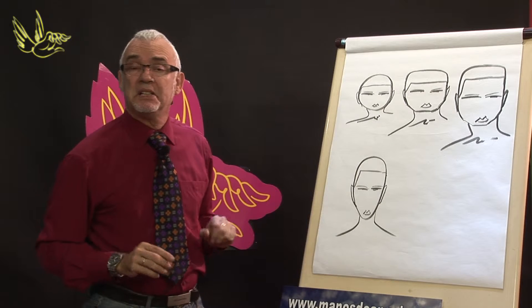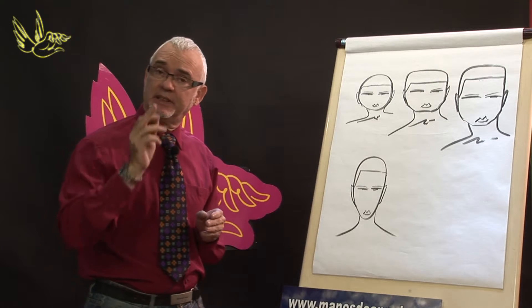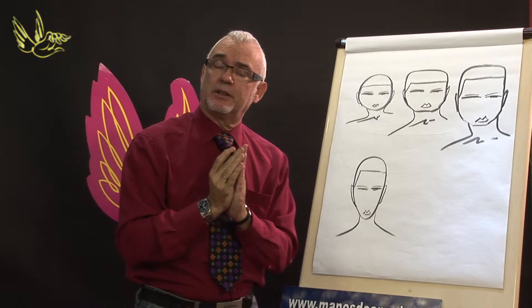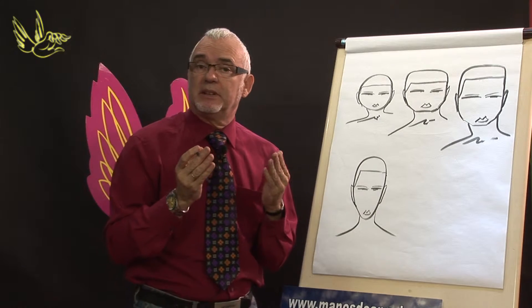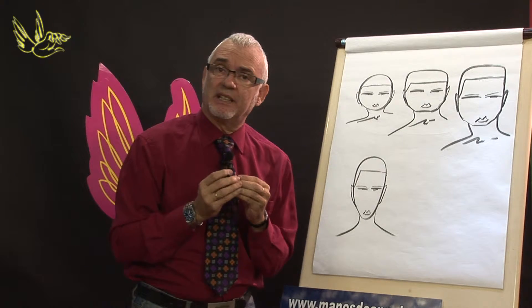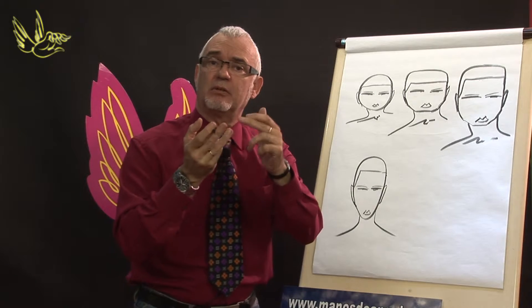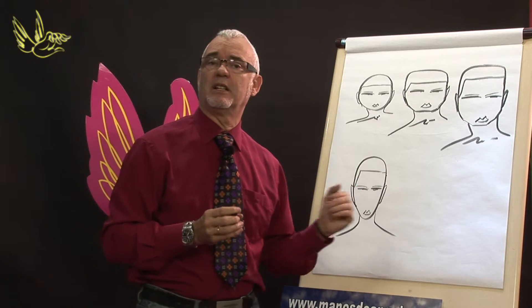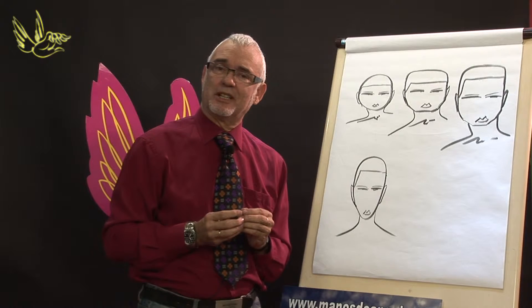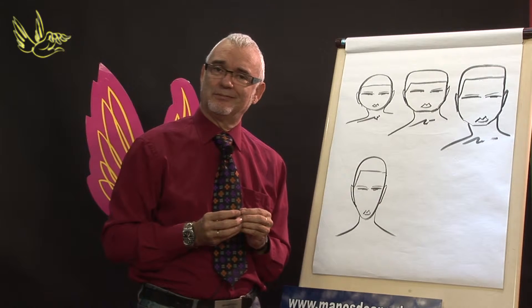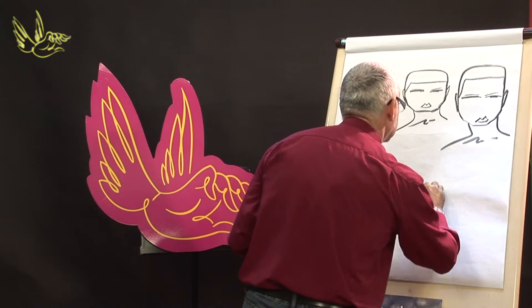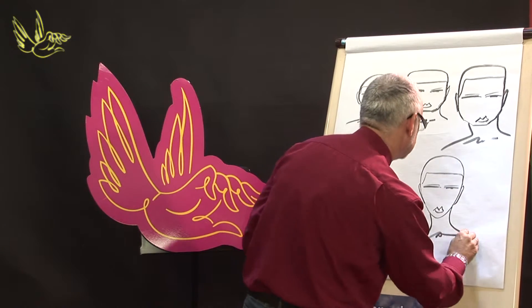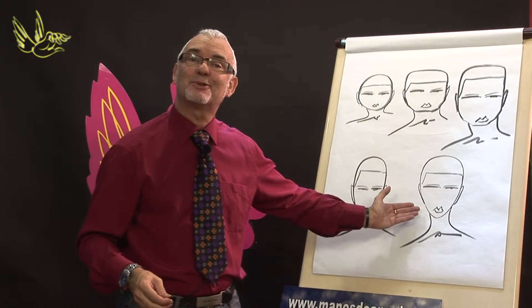Now we're going to draw the typical oval, which we call 'the oval.' The oval is a small oval with small features. It is the ideal oval — the type of oval where we can apply any style. Pulled back, with a fringe, without a fringe, curly, straight — any type of style suits it. The client who has this type of oval is lucky, because they can wear any style they like. Here I present the oval face.